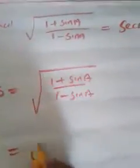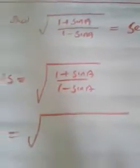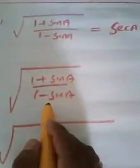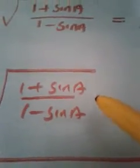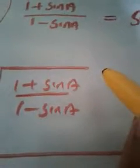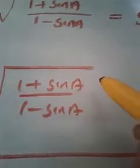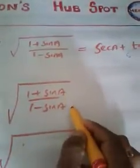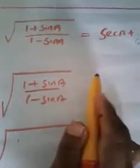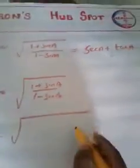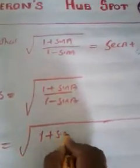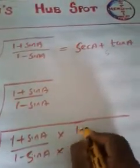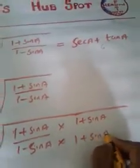Let me start from LHS. LHS is the square root of (1 plus sin A) divided by (1 minus sin A). The denominator is 1 minus sin A. Here the ratios are in terms of sine, which is the most simplified form — not sec or cosec or cot. Since it is already in simplest form, what I am going to do is multiply both numerator and denominator with its conjugate. The denominator is 1 minus sin A, so the conjugate is 1 plus sin A.